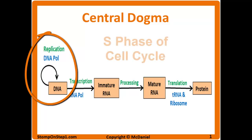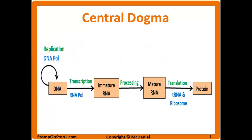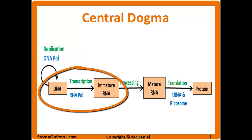DNA is going to be acted on by DNA polymerase to give us replication, so you're basically just doubling the DNA so you can go into mitosis, meiosis, whatever. DNA is going to be converted to RNA, which is immature, through the process of transcription via RNA polymerase.